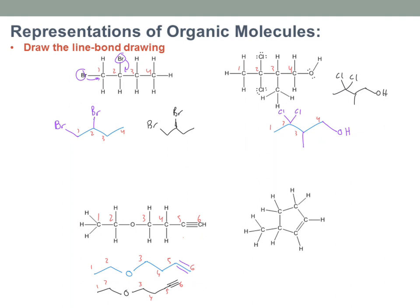Lastly, rings throw people for a loop. I'll number: one, two, three, four, five — a five-membered ring. To draw the line bond drawing, I just draw a pentagon, which represents those five carbons. There's a double bond between one and two, so I add that. And there's one carbon coming off of carbon three, so I draw one line out from there. Now I have a pentagon with a double bond and an extra line — that's it. Practice numbering your carbons so you don't lose track, and that's how you do line bond drawings.